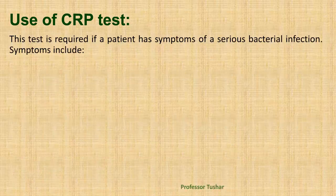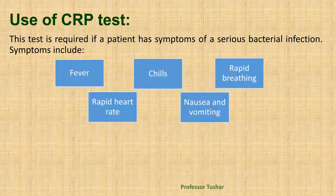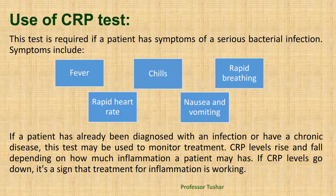This test is required if a patient has symptoms of a serious bacterial infection. Symptoms include fever, chills, rapid breathing, rapid heart rate, and nausea and vomiting. If a patient has already been diagnosed with an infection or has a chronic disease, this test may be used to monitor treatment. CRP levels rise and fall depending on how much inflammation a patient has. If CRP levels go down, it's a sign that treatment for inflammation is working.